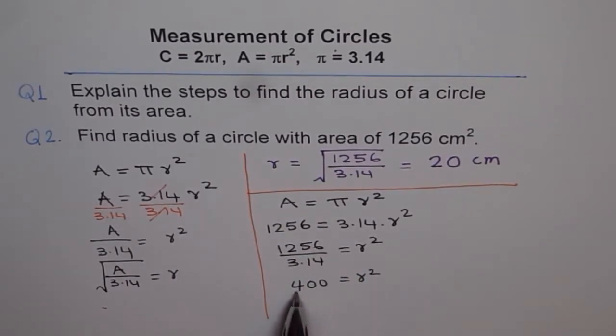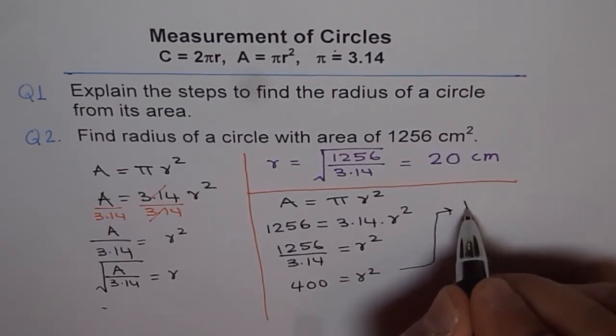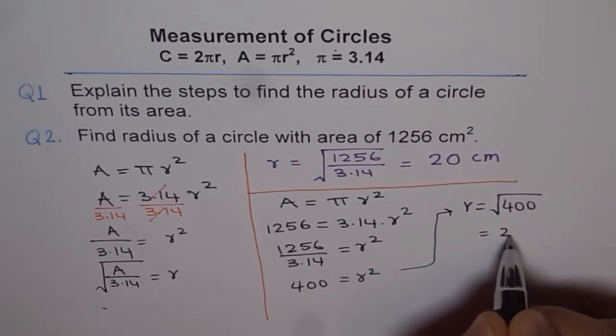Now if you do square root of 400 you get the value of r. So from here you can say r = square root of 400 which is 20.